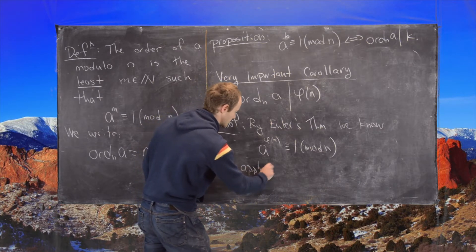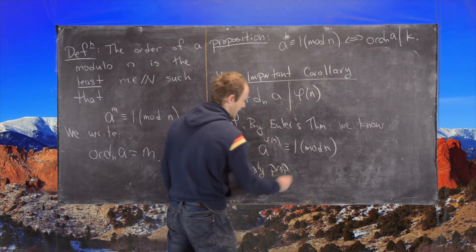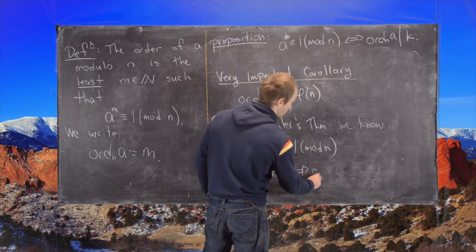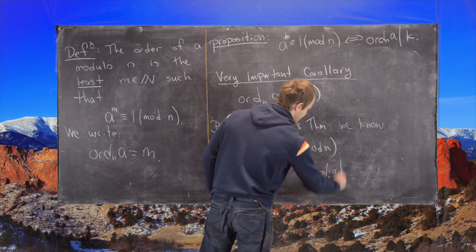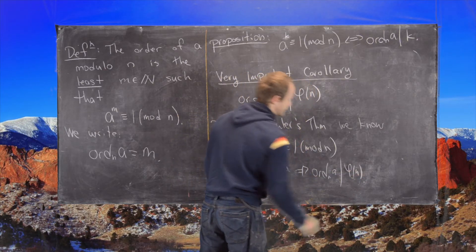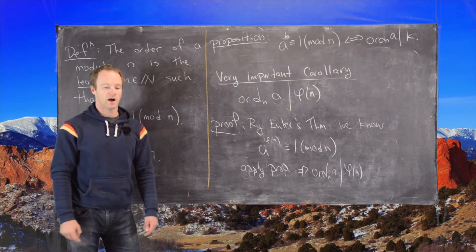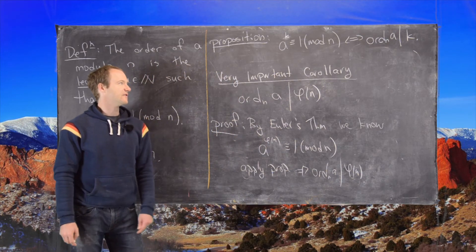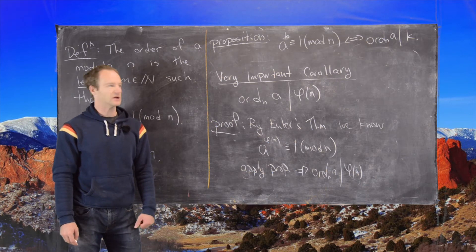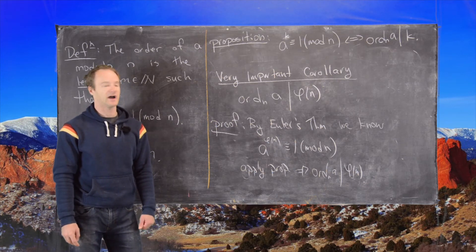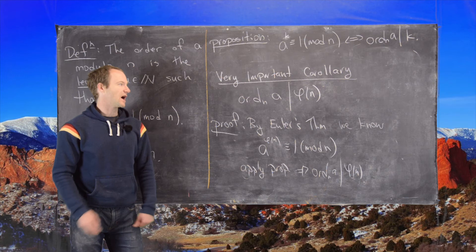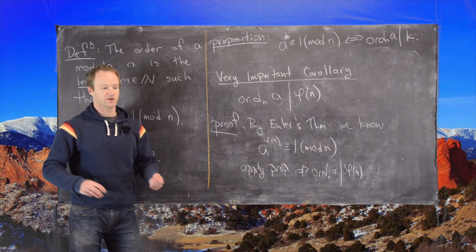And that will tell us that the order modulo n of a in fact divides phi of n. So in the next couple videos, we're going to use this very important corollary a bunch of times in order to find possible orders of elements and other such things.